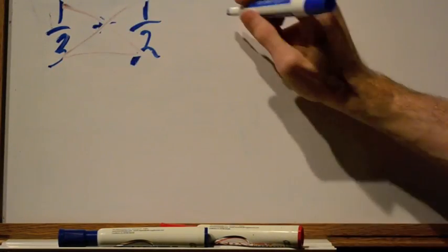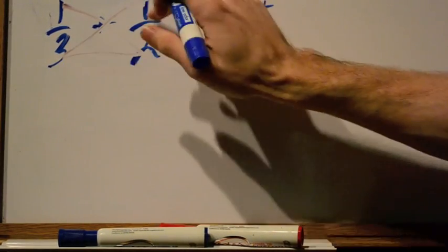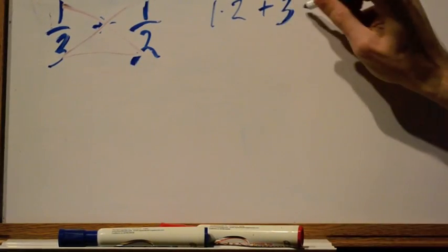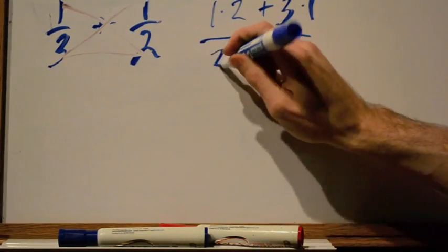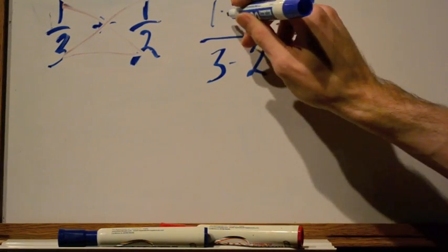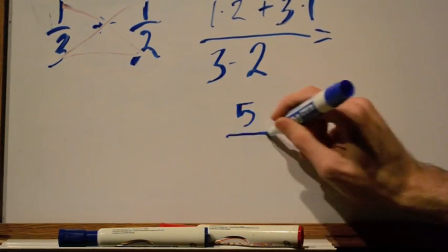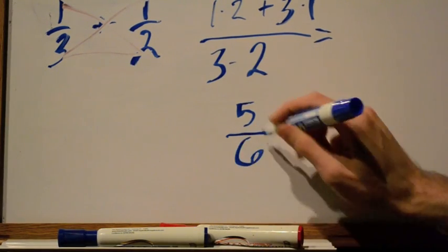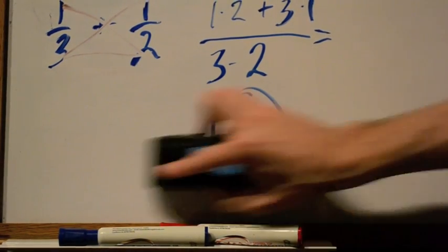So in our case, it would be 1 times 2 plus 3 times 1 over 3 times 2. What does that equal? 1 times 2 is 2 plus 3 times 1 is 3, so it equals 5 over 3 times 2 is 6. Guess what? The same exact answer. It works every single time. Rapid fire. It's pretty cool.